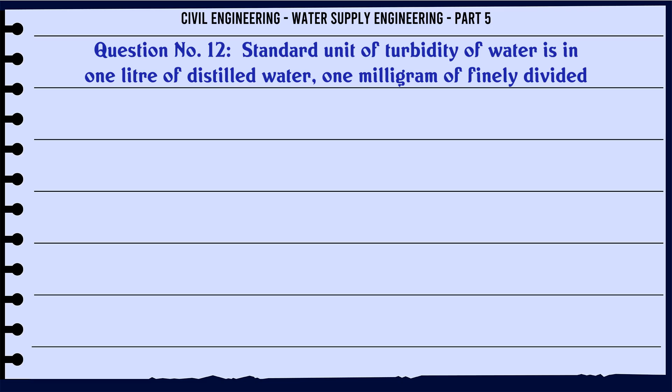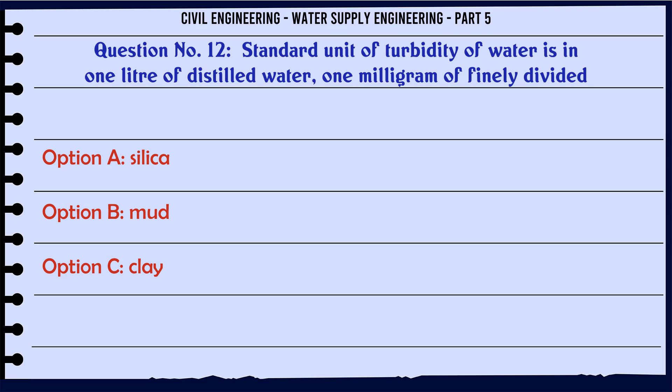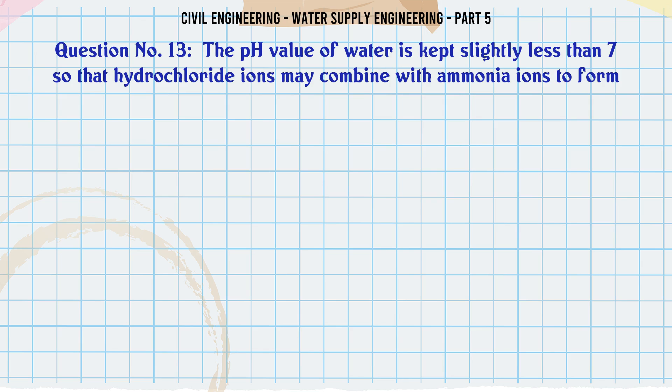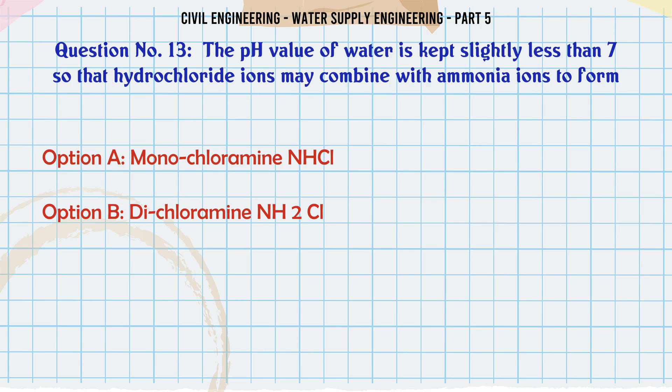The standard unit of turbidity of water is 1 mg of finely divided material in 1 liter of distilled water. The material is: A. Silica, B. Mud, C. Clay, D. Organic matter. The correct answer is Silica.